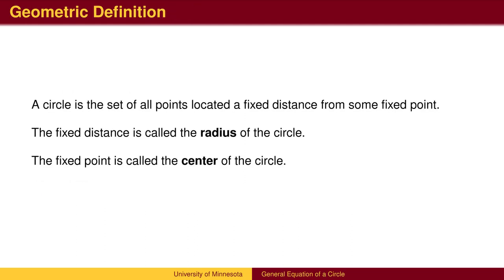The geometric definition of a circle is the set of all points located a fixed distance from some fixed point. The distance is called the radius, and the fixed point is called the center.